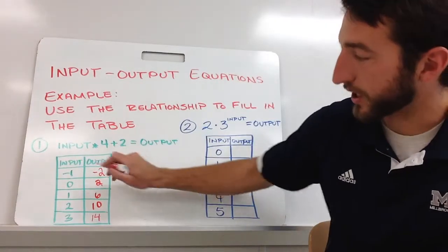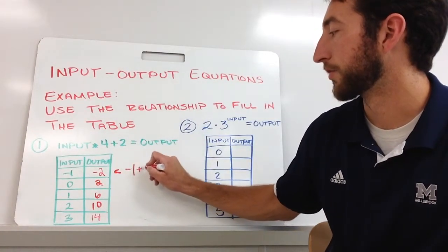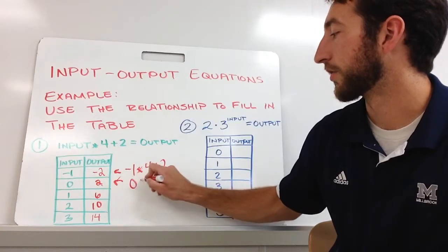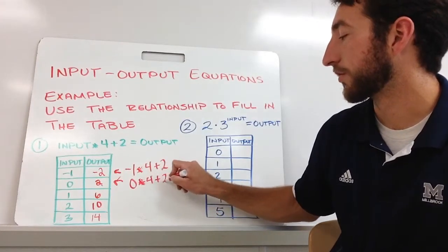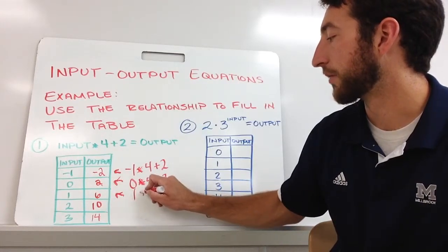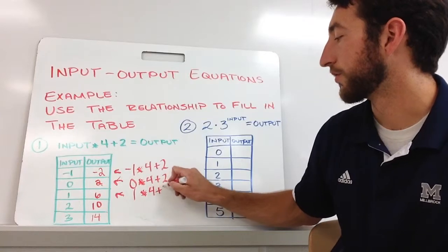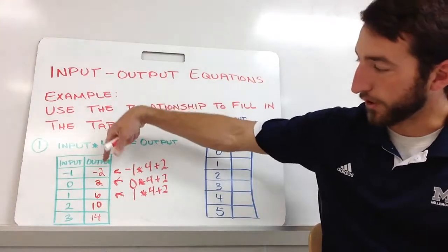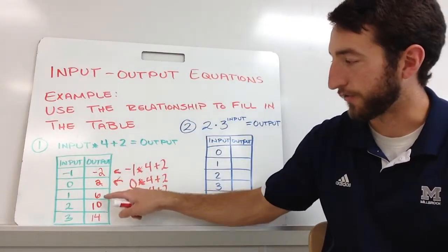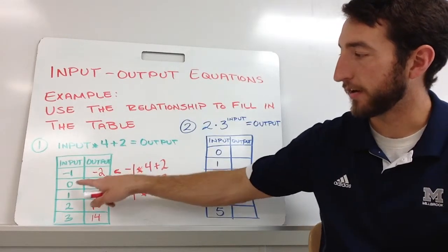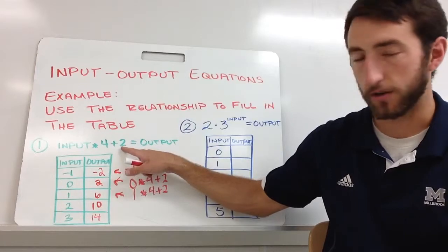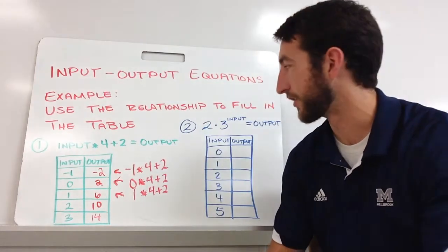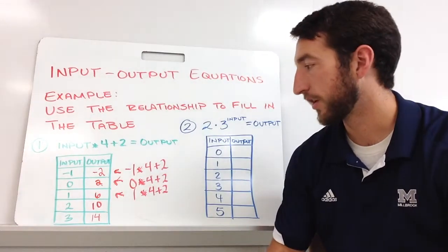So for each one we take the input, multiply by four, then add two. If you notice, we're adding four to the output each time. And when input is zero the output is two. There's a relationship there we'll get into more once we cover linear equations later in the semester.